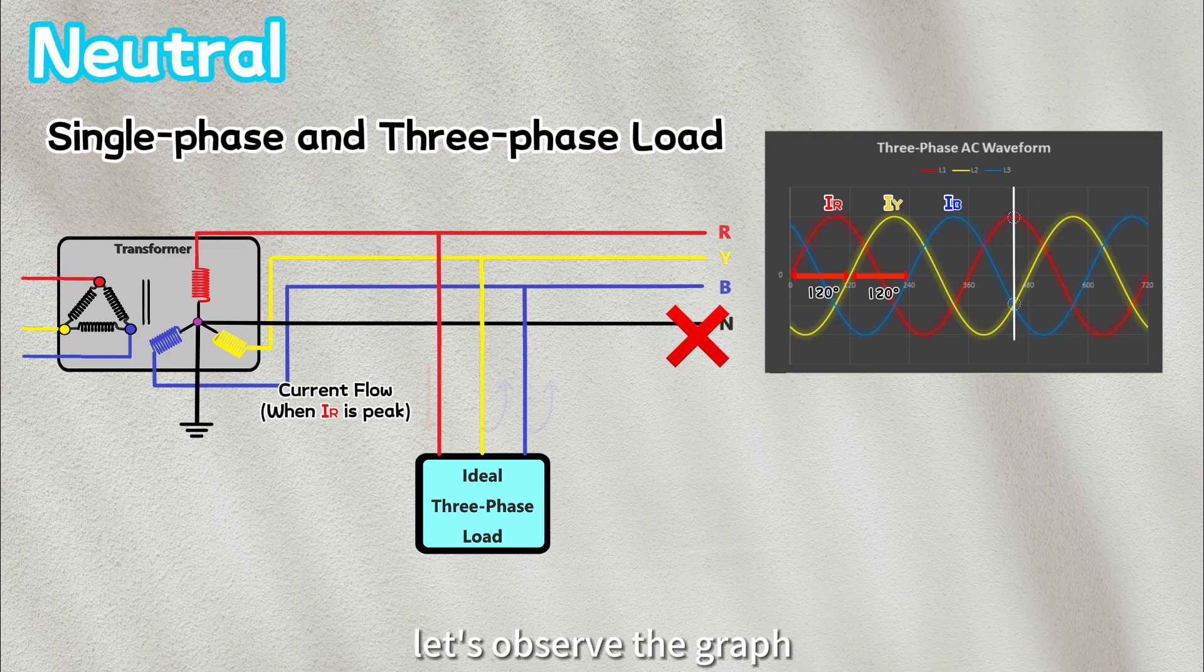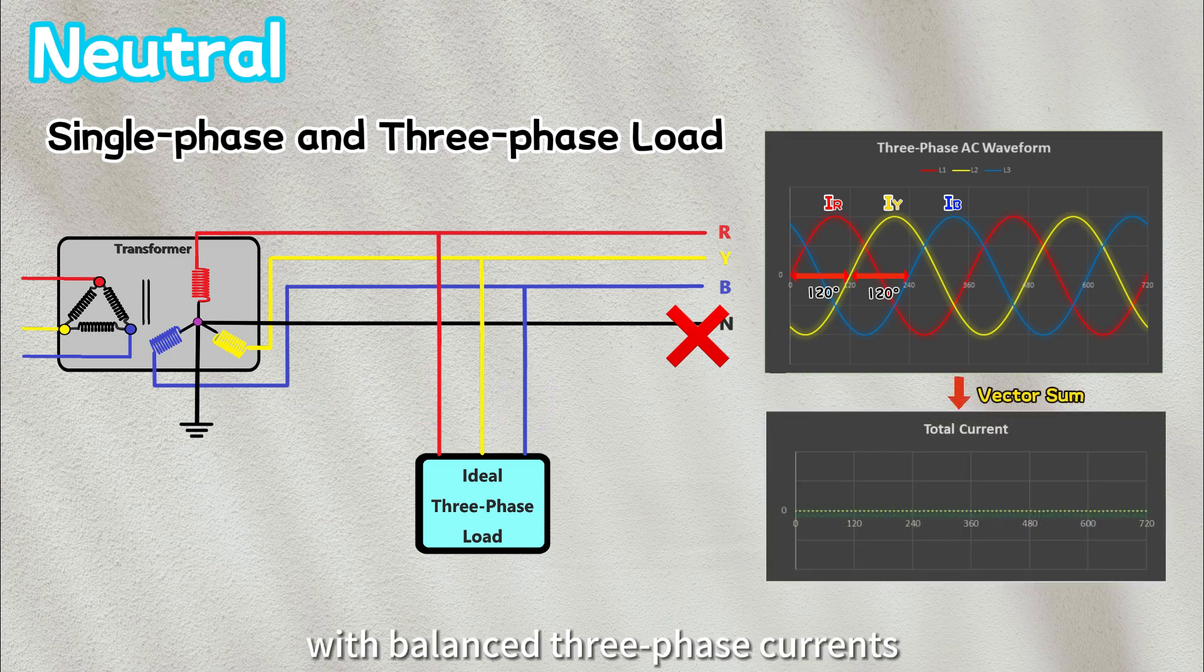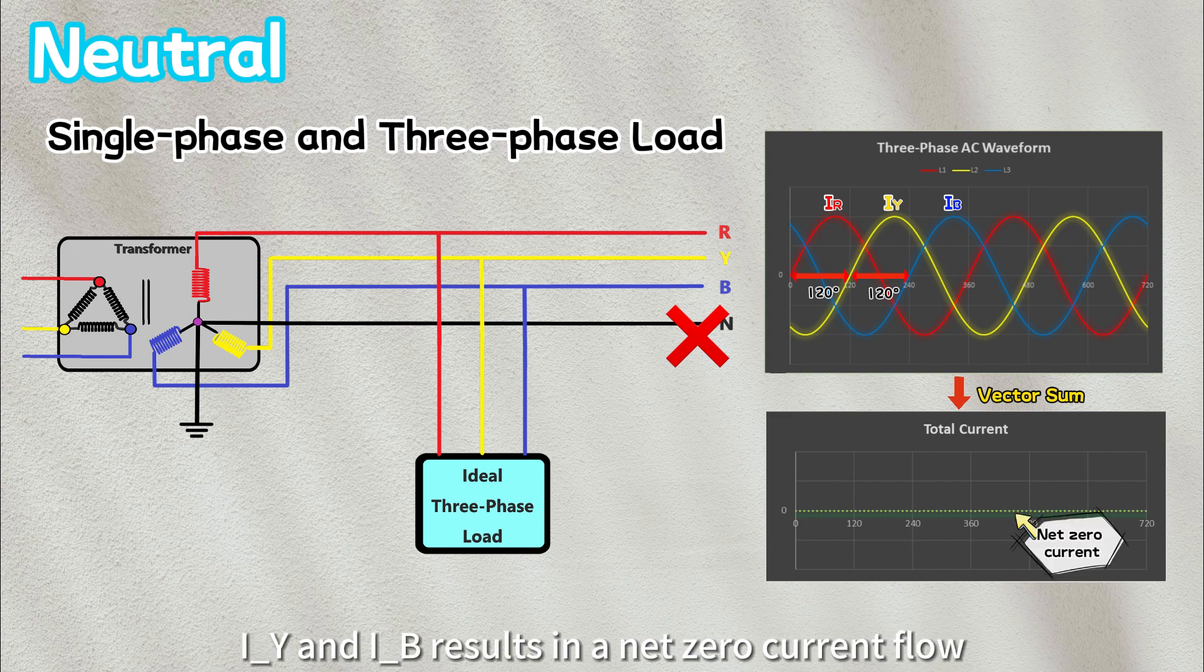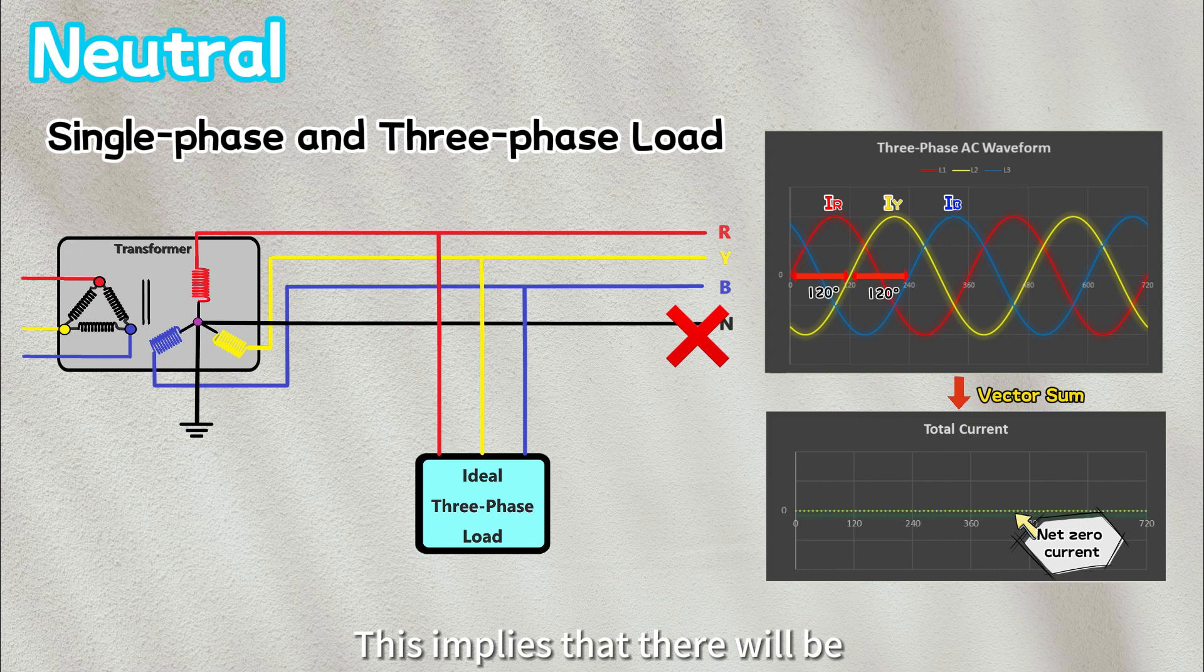For better understanding, let's observe the graph with balanced three-phase currents. At any given moment, the vector sum of IR, IY, and IB results in a net-zero current flow. This implies that there will be no current flowing through the neutral cable and neutral cable can be eliminated.